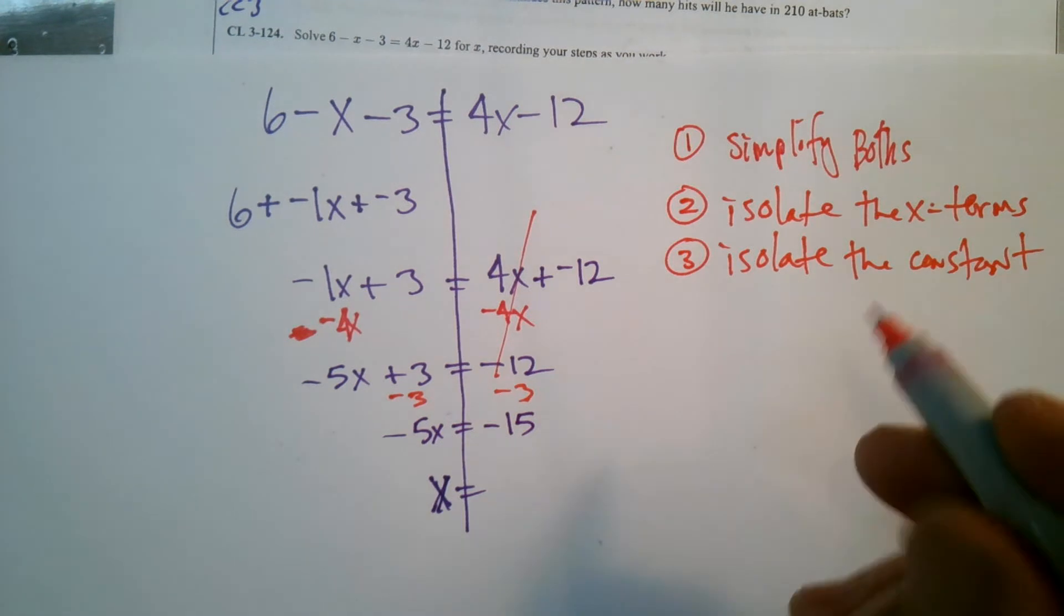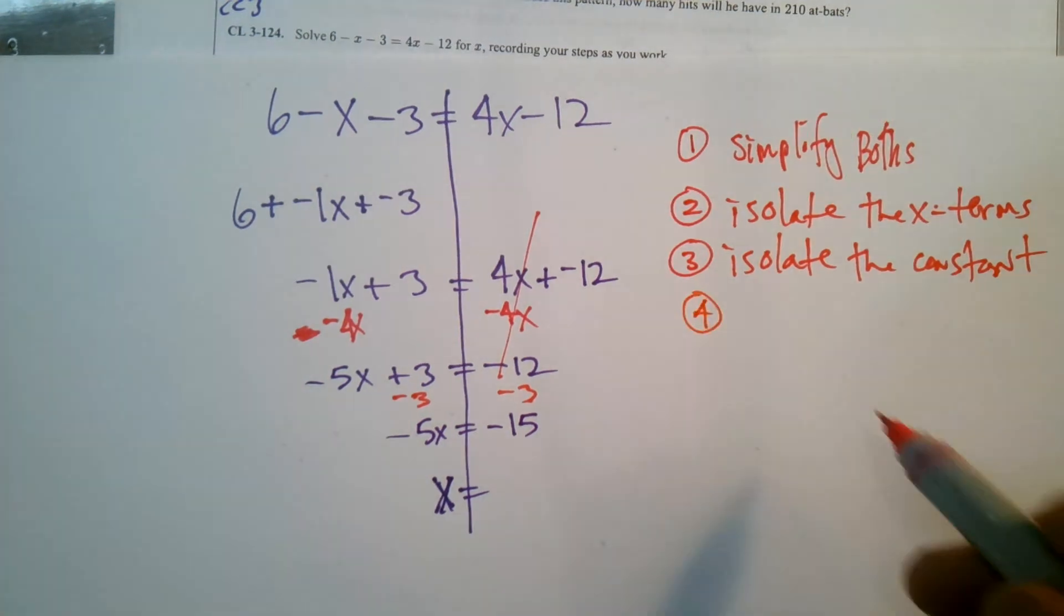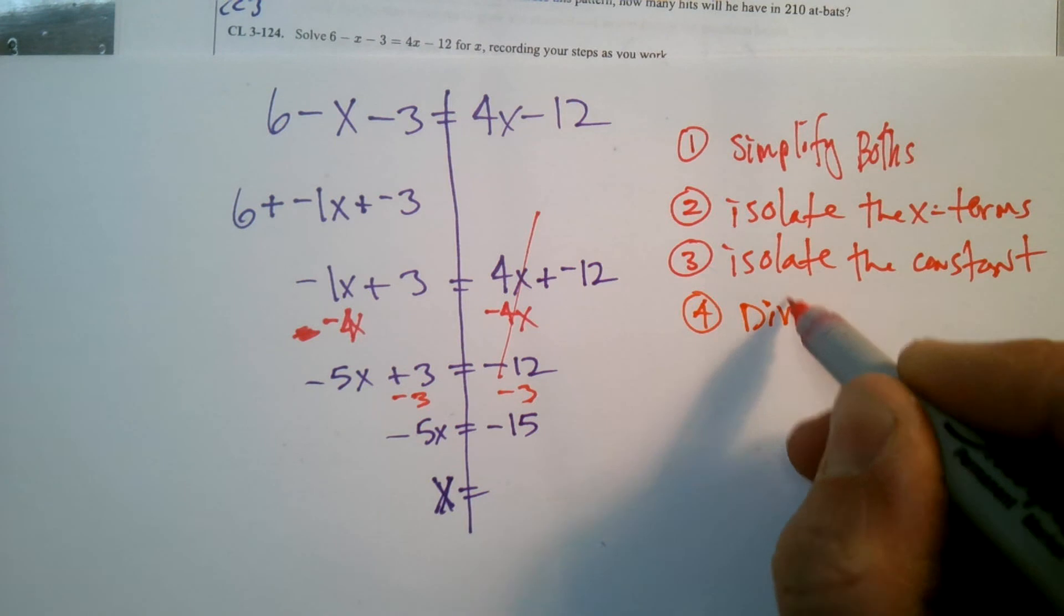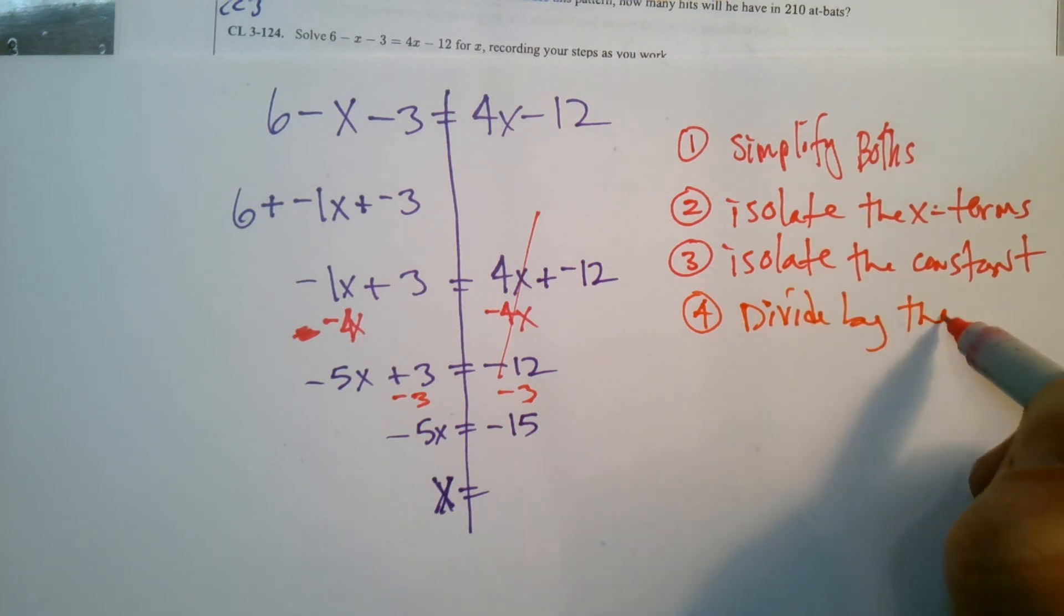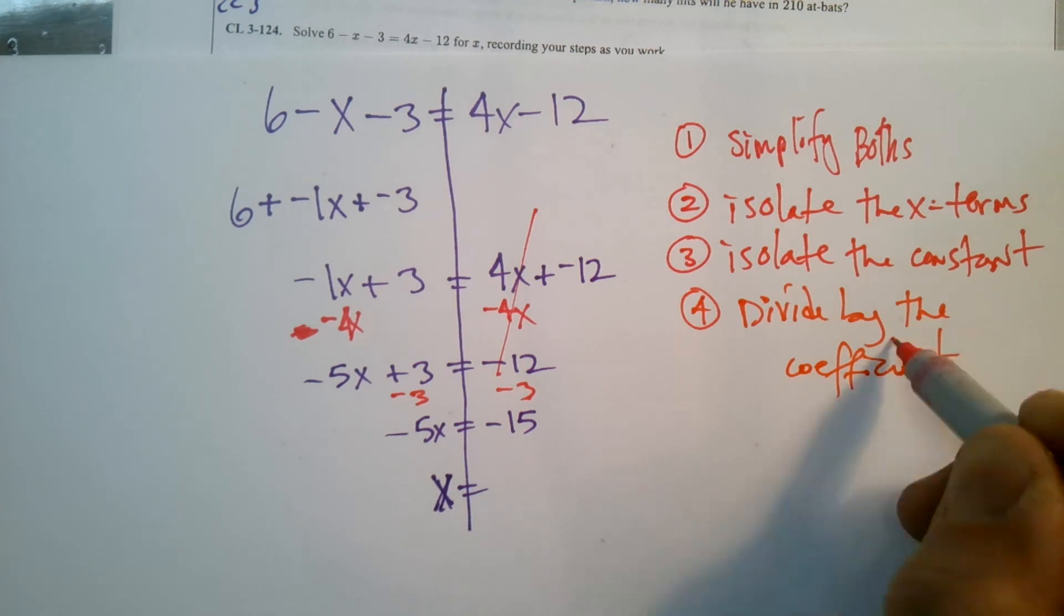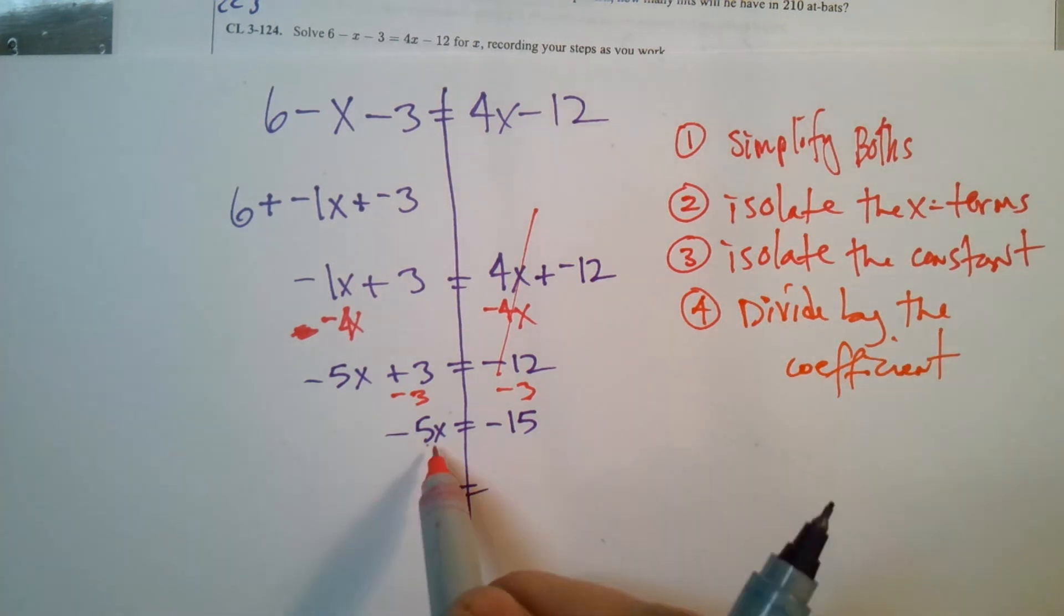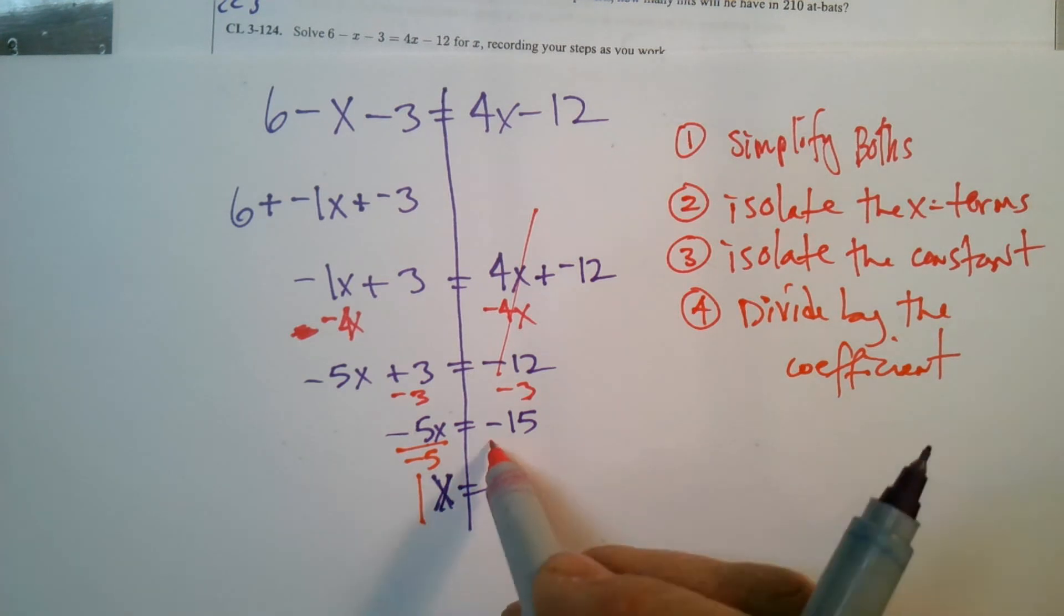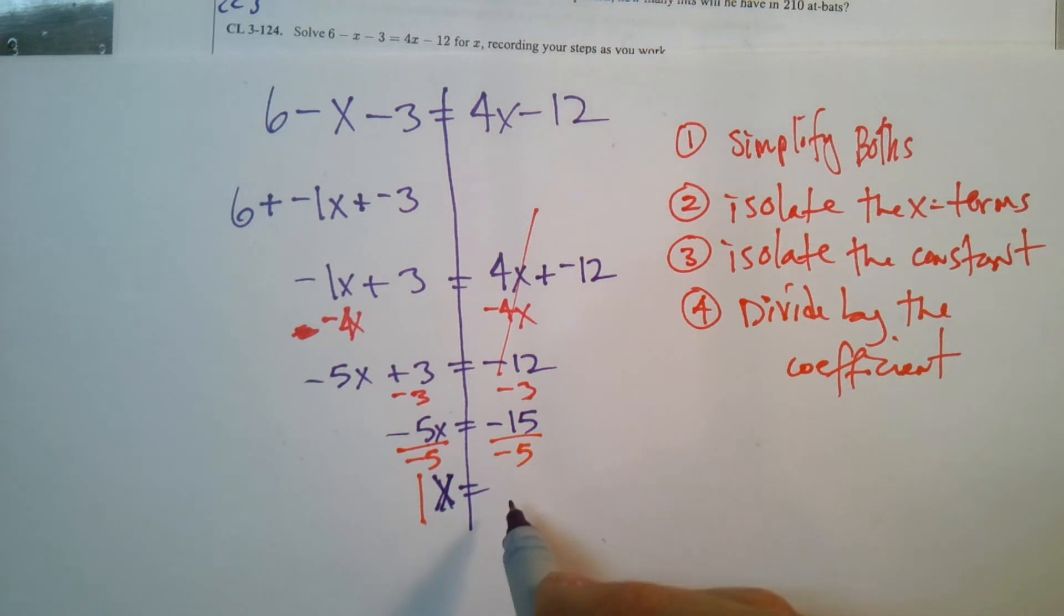And then my last step, my fourth step, is to divide by the coefficient. Divide by the coefficient of the X. That's the only coefficient that's left, this negative 5. So I'm going to divide by negative 5. Why? Because negative 5 divided by negative 5 is 1X, and that's what I want. So I divide both sides by negative 5. So I have my answer here: negative 15 divided by negative 5 is positive 3. So X is equal to 3.